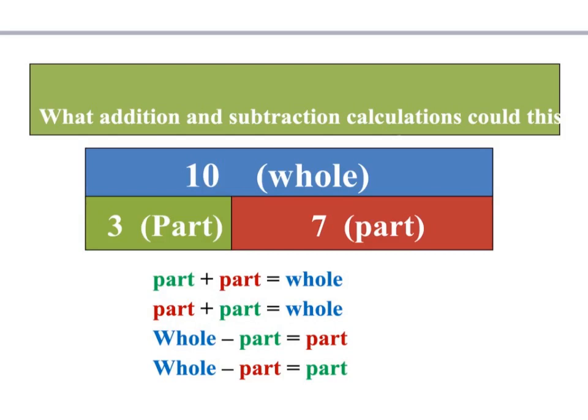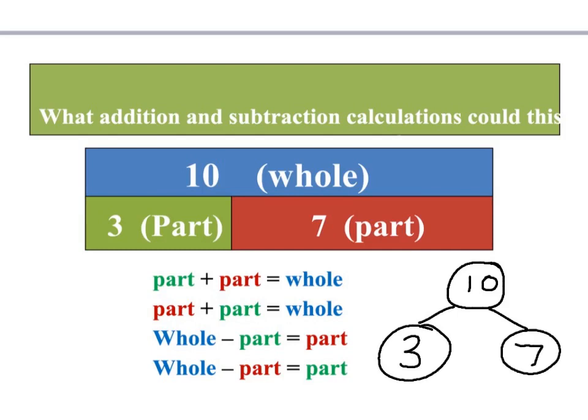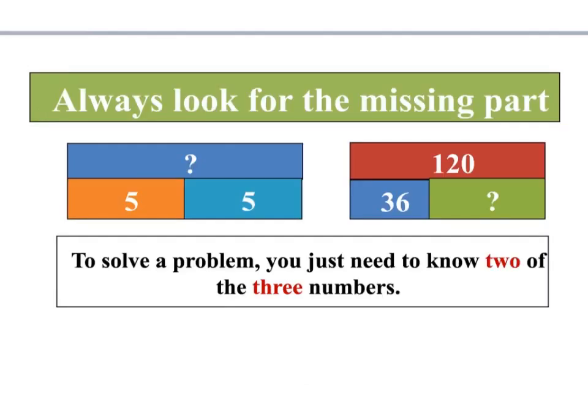The top one is the whole amount — there's 10 — and it's made up of two parts: 3 and 7. So the green part plus the red part will give you your whole: 3 plus 7 equals 10. Or you can swap those the other way round — red part plus the green part equals 10. Part plus part equals whole. Or you might only have the whole number and one of the parts, in which case you'll need to do a take away. The whole take away either the green or the red will leave the opposite part. We've always got to look for the missing part.